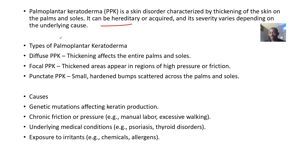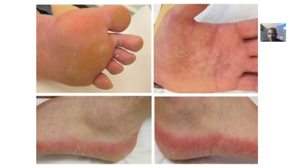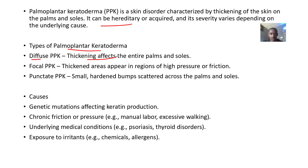Types of palmoplantar keratoderma include: diffuse, where there is thickening on the entire palms and soles; focal, where thickening appears in regions of high pressure and friction; and punctate, where small spots are scattered across the palms and soles but not uniformly distributed.